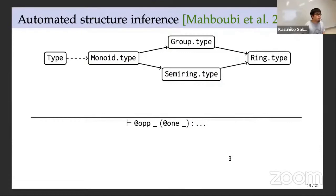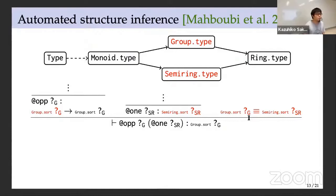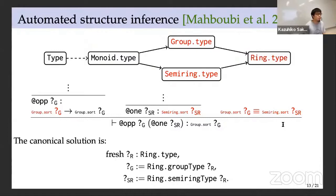The canonical solution is instantiating the unification variable m with the semiring-to-monoid coercion applied to sr, and we do this by declaring canonical instances. The second example is minus one. The opposite operator is a group operator and one is a semiring operator, so we again must solve a unification problem between group and semiring. The group structure and semiring structure do not inherit from each other, making the problem more complicated.